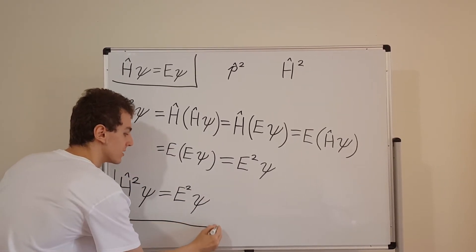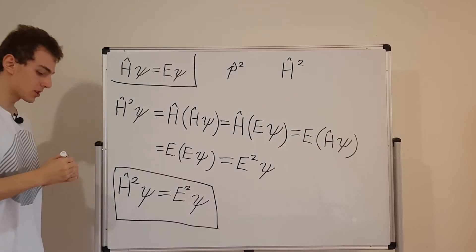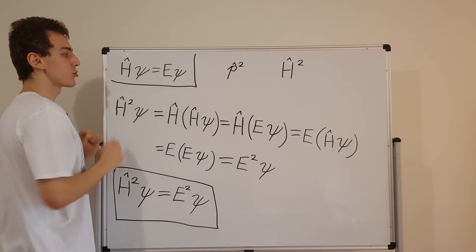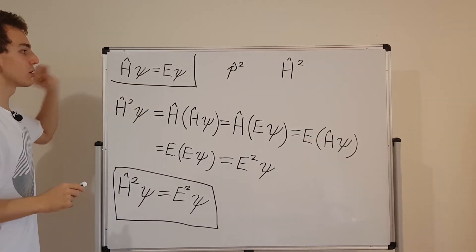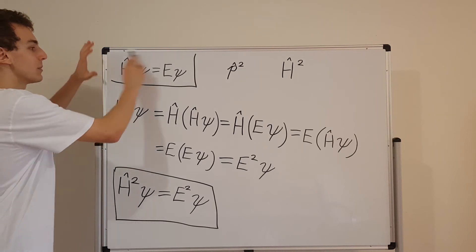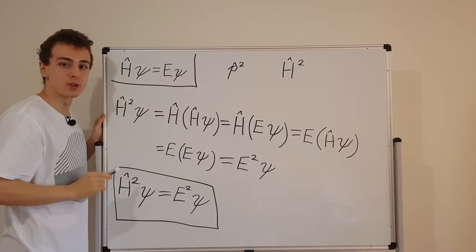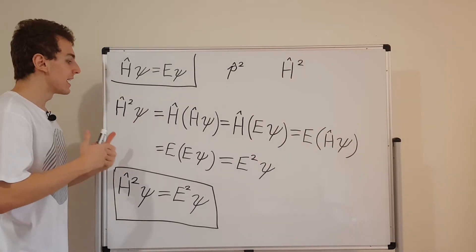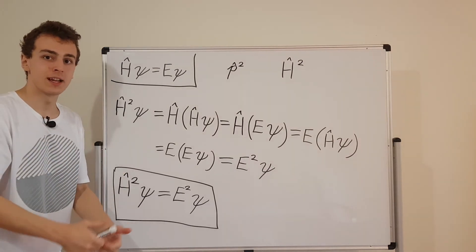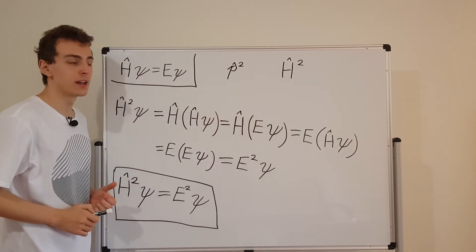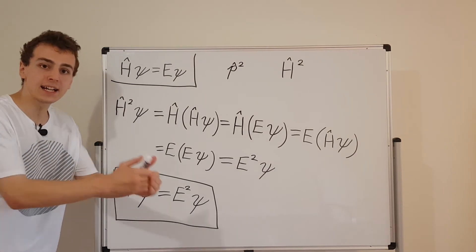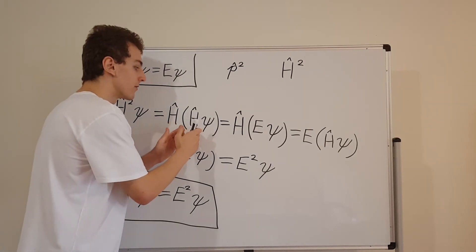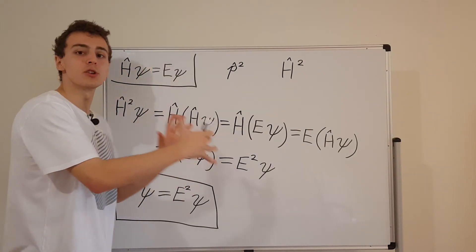This is the takeaway message of this video — we'll put it in a box. So how did we get this? We used the time independent Schrödinger equation, which was given to us from before, written in terms of the Hamiltonian operator. Then we understood the Hamiltonian operator squared to actually be the operator acting twice, analogous to how we talked about momentum squared before. It's just the operator acting on little psi twice — first with the Hamiltonian operator and then with the Hamiltonian operator again.